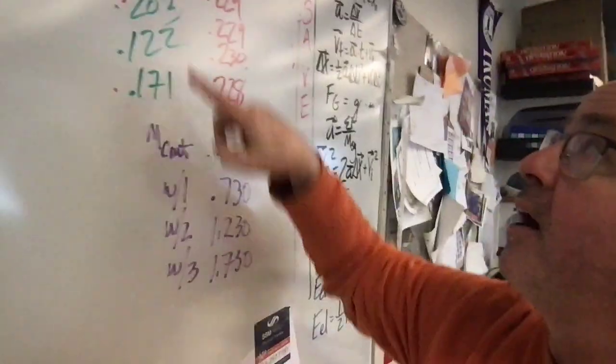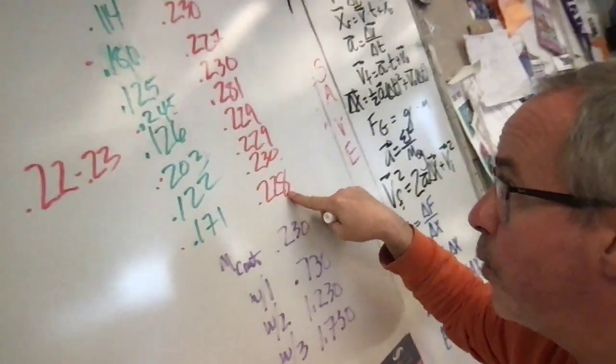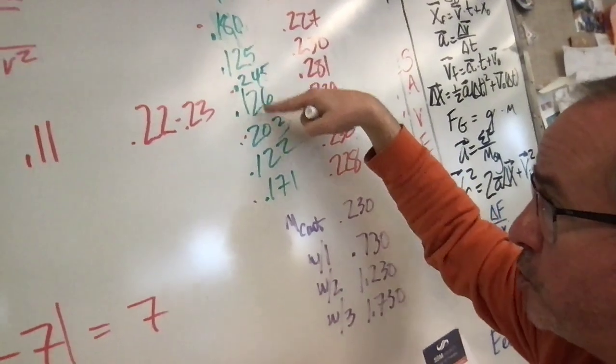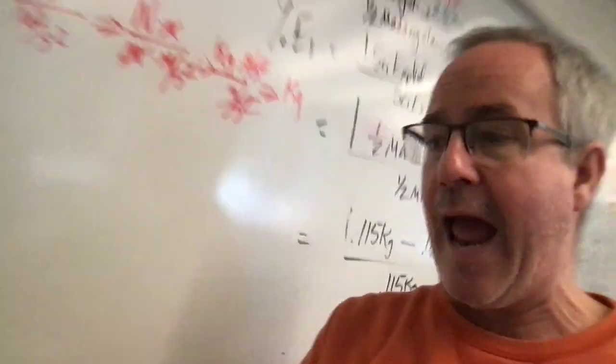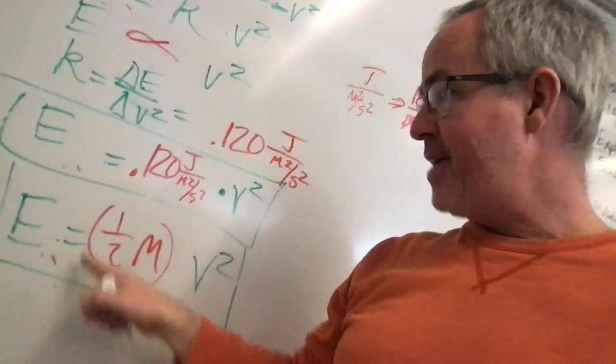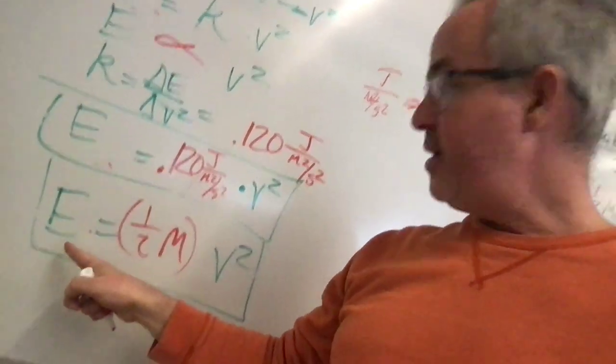Kids all called out that it might be the mass of the cart but when we took a look at people's data the mass of their carts were around 230 grams or 0.230 kilograms and people's slopes were about 0.120 or 0.121, which the kids figured out that that was about half of the total mass, so we figured out that the slope represents half the mass of the system.